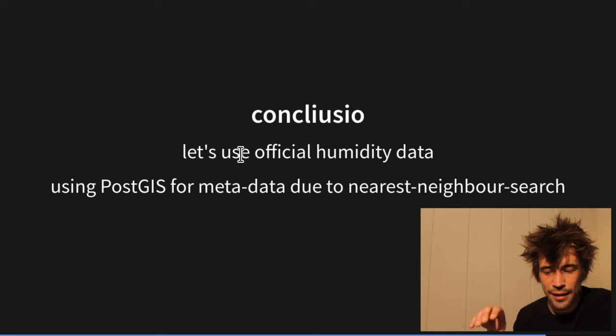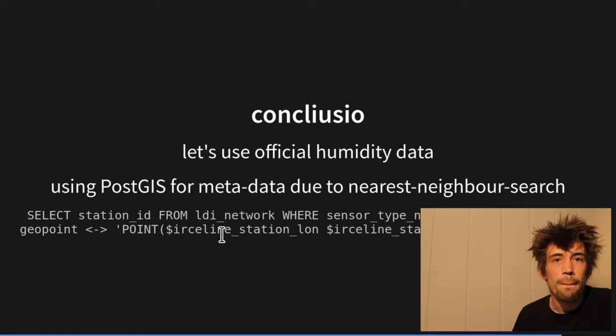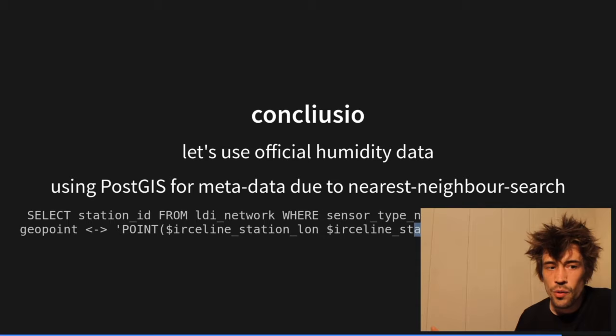To find the closest station in the other network, we use geo-queries in InfluxDB. We store coordinates in our metadata and use them in a variable query to get the longitude and latitude from the first network, then use another variable to query the closest station in the other network based on those coordinates.